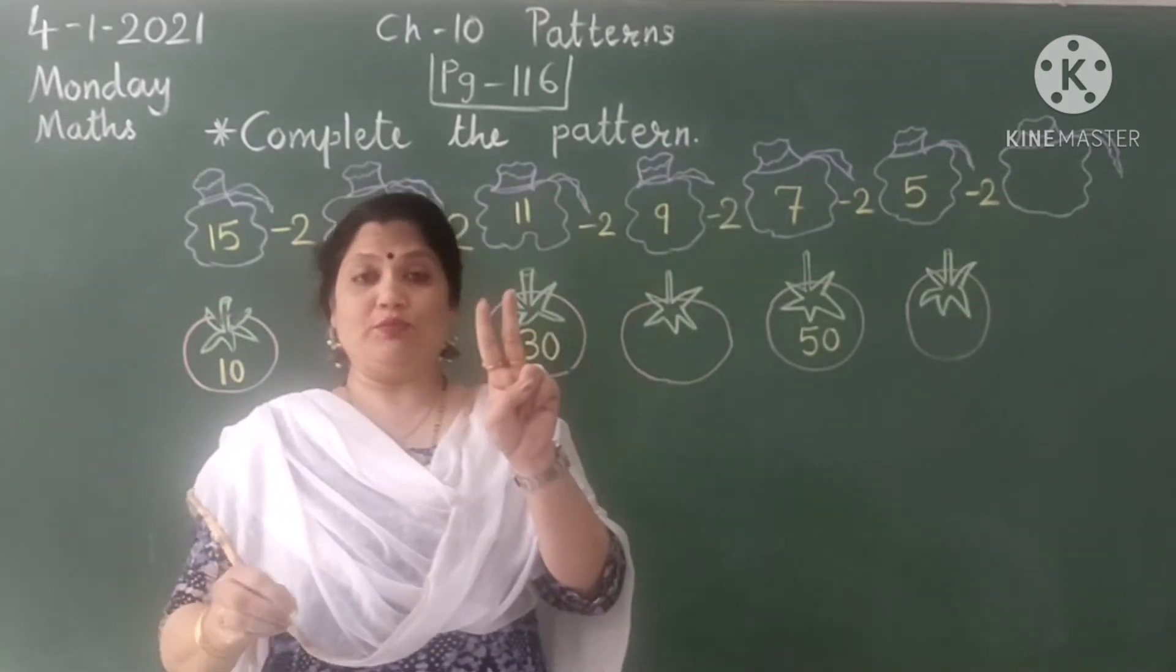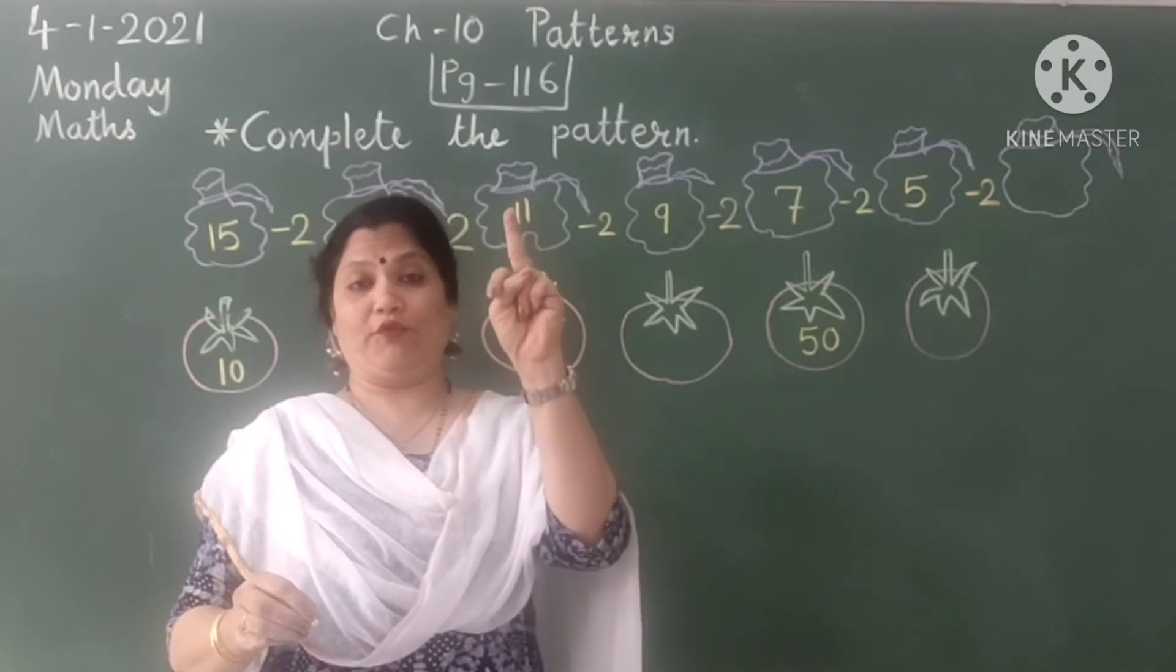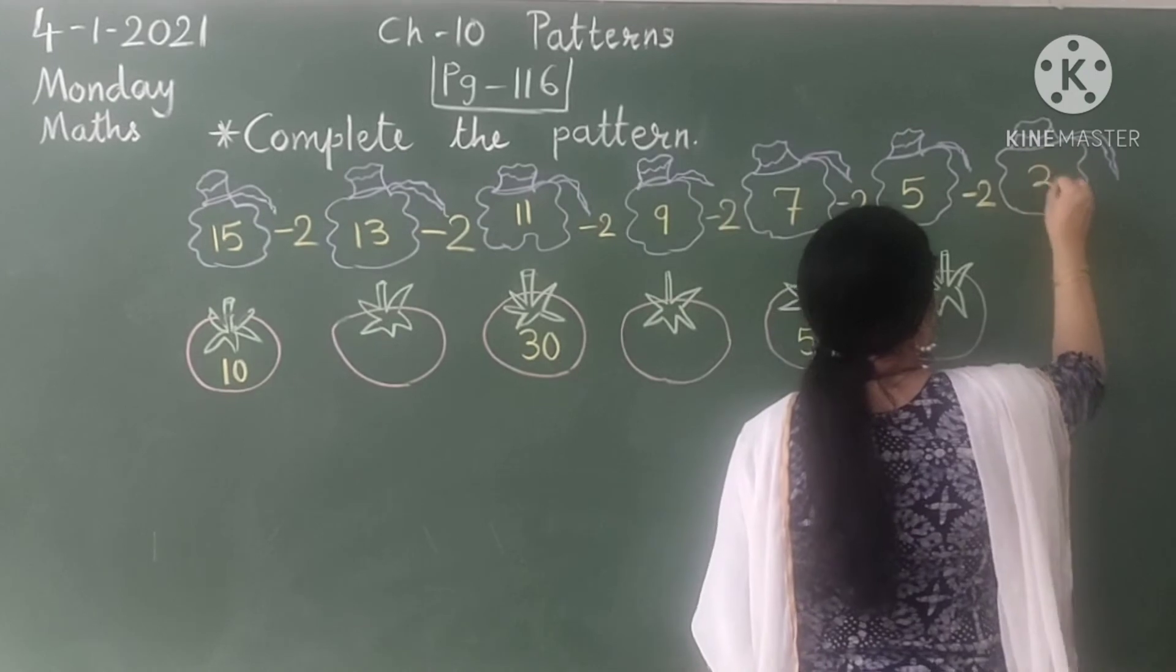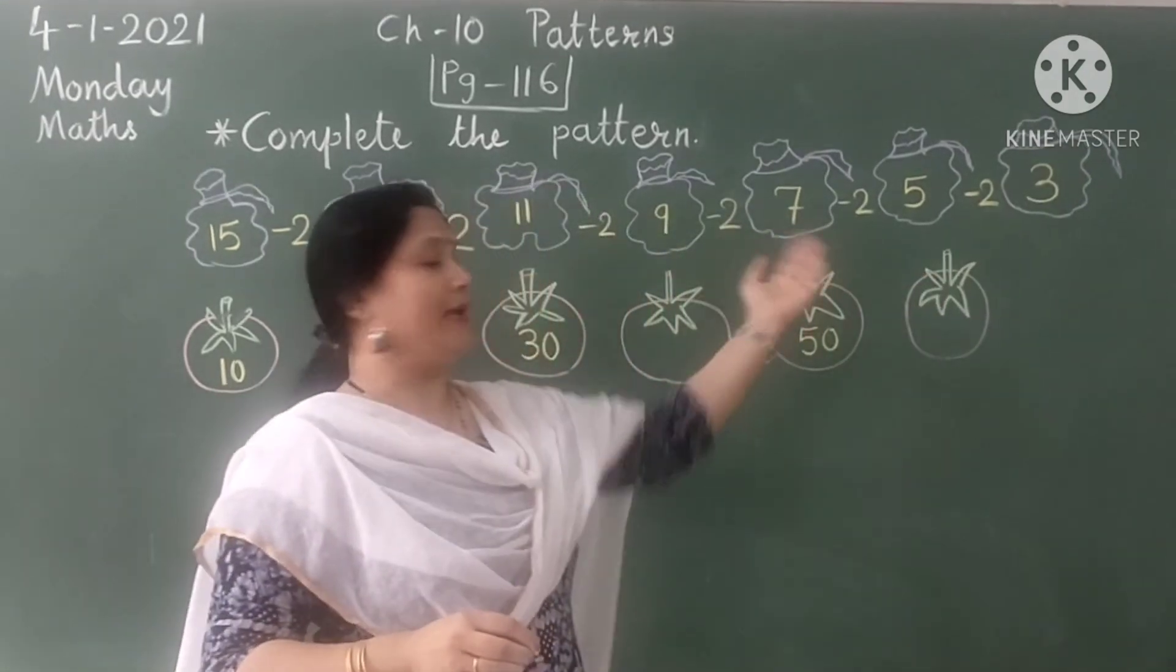Let's subtract 2 more numbers from 5. Before 5 is 4 and 3. So this pattern is complete.